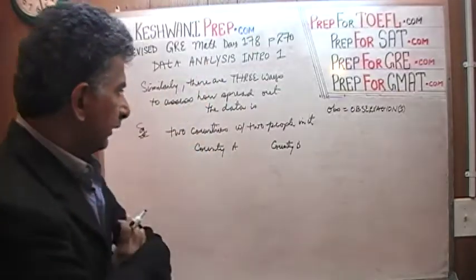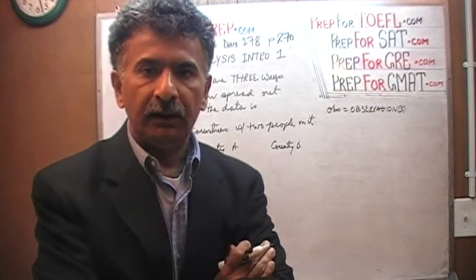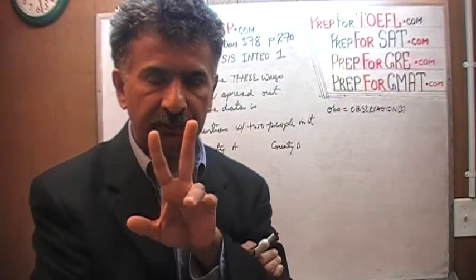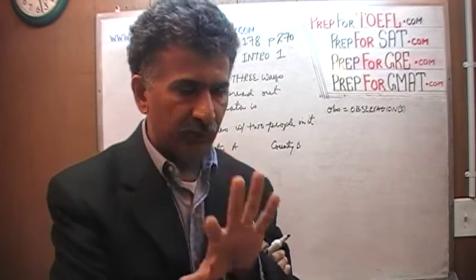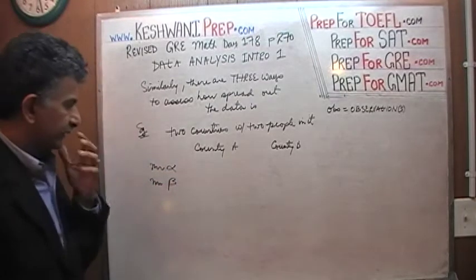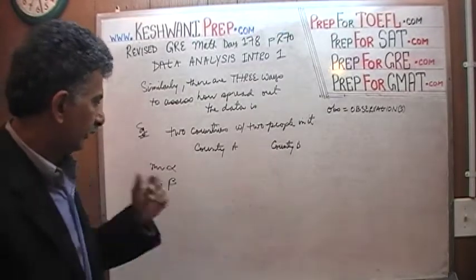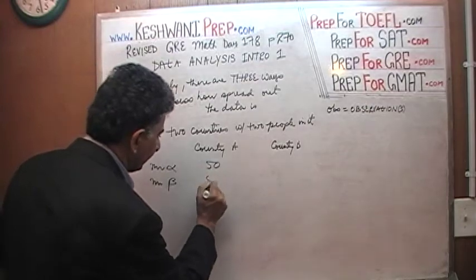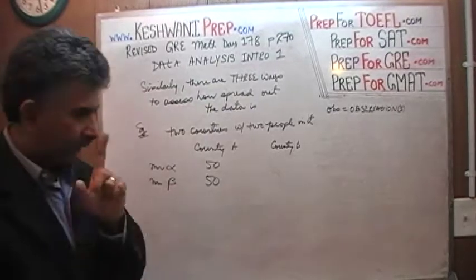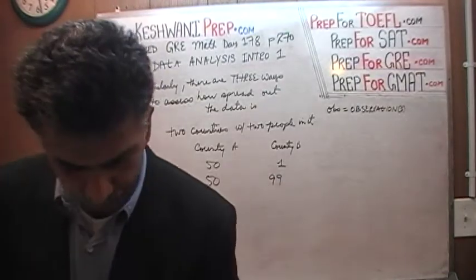So two countries, country A and country B, each with two people. The two people are named Mr. Alpha and Mr. Beta — namesakes in each country. Mr. Alpha's income is $50,000 and Mr. Beta's income is $50,000 — that's country A. In country B, Mr. Alpha makes $1 and Mr. Beta makes $99. As you can see, country A is pretty egalitarian.